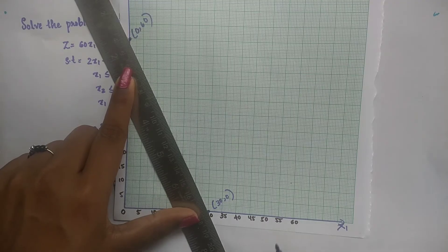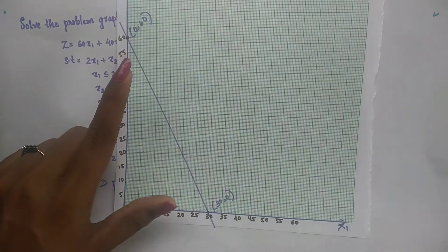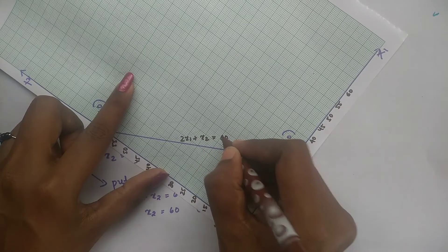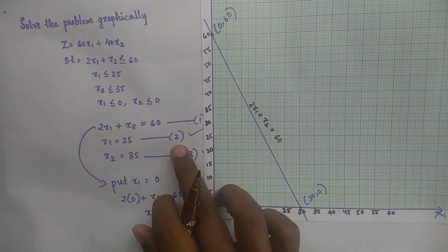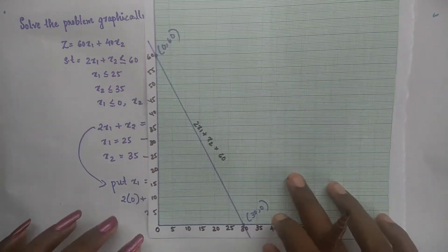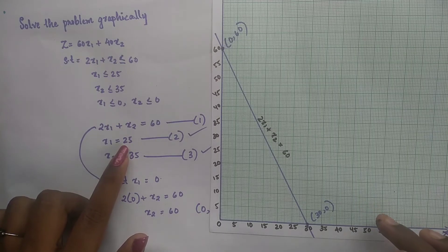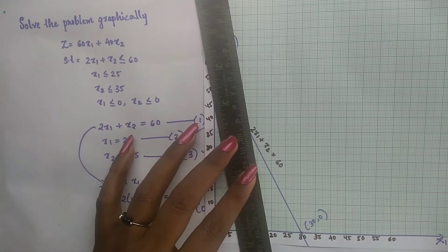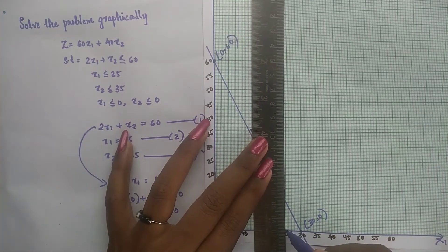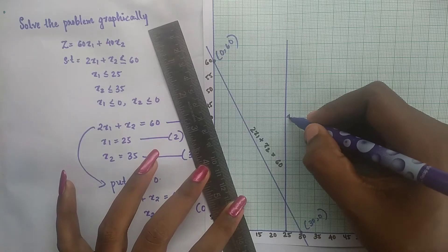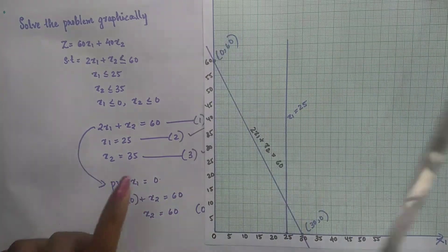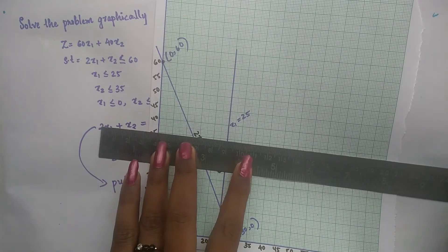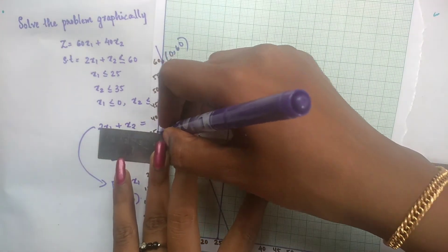The line 2x1 plus x2 is equal to 60 is plotted using these two points. The equation x1 is equal to 25 is a line parallel to the x2 axis. The third equation, x2 is equal to 35, is a line which is parallel to the x1 axis.